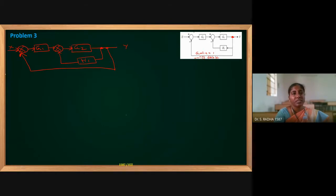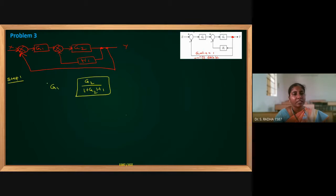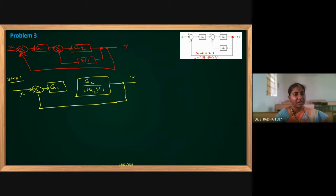Now I will try to reduce. Step number 1: this is just redrawing the diagram, and now I am going to step number 1 — elimination of negative feedback for G2 and H1. In the place of G2 and H1, I write G2 divided by (1 plus G2·H1). I am converting it into a single block. G1 is already there, the first summing point is present, unity feedback is present, and output is Y.